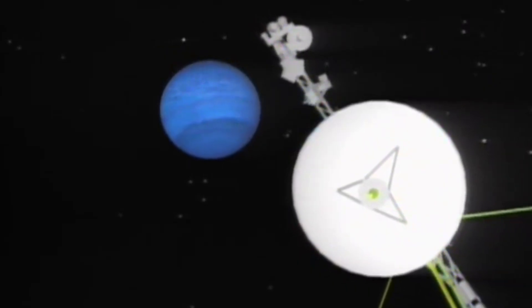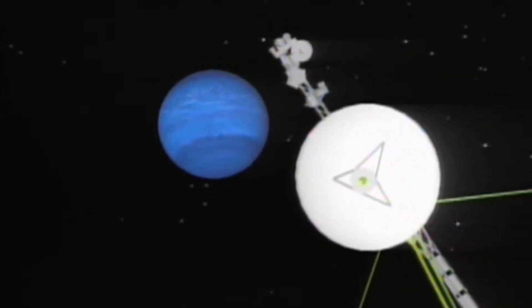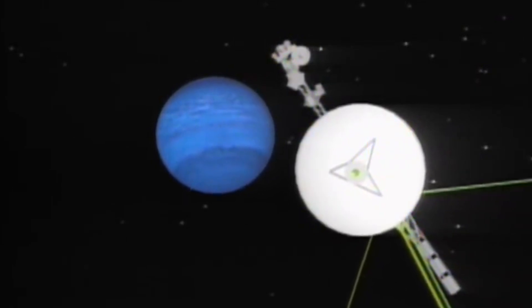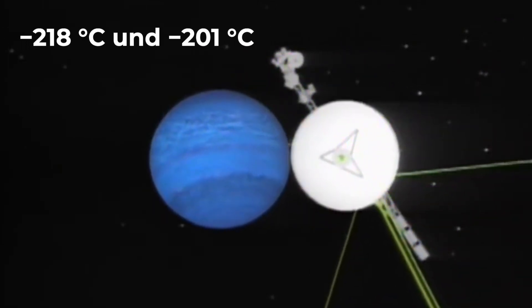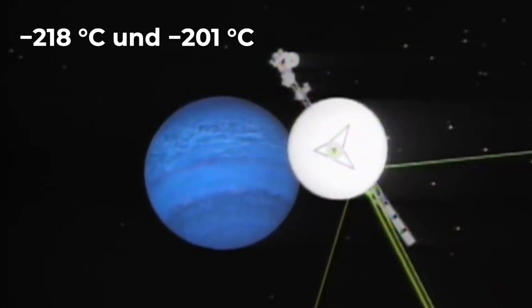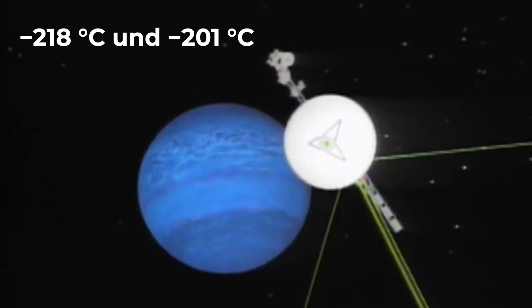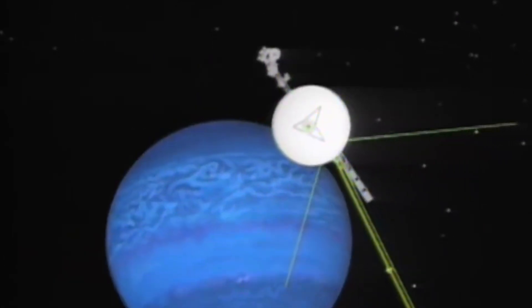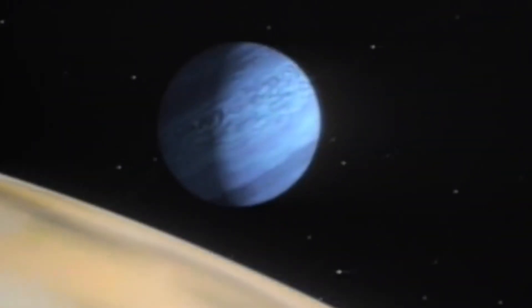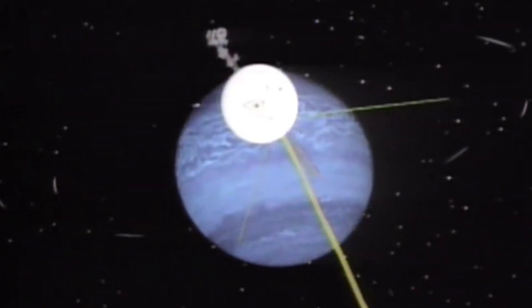The information collected by Voyager 2 led to the conclusion that the surface of Neptune, with an average temperature between negative 218 degrees Celsius and negative 201 degrees Celsius, is approximately as high as that of Uranus, despite the fact that Neptune is much further away from the Sun than Uranus. Astronomers were completely baffled by these new facts about the ice giant. It was time to search for explanations.